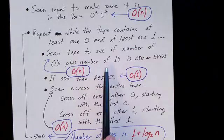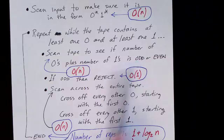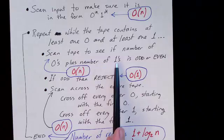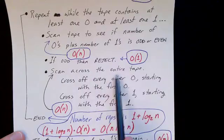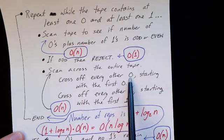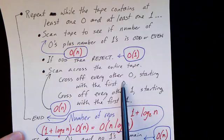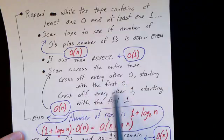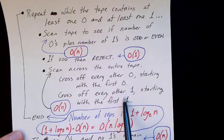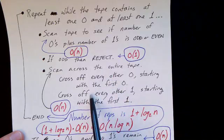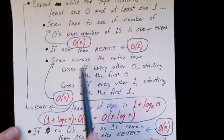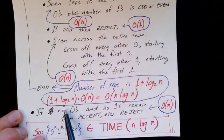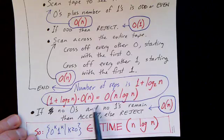If there is one extra one or one extra zero, the total would be odd — so if it is odd, we reject right there, since we must have the same number of zeros as ones. Then we scan across the entire tape and cross off every other zero, crossing off half of our zeros starting with the first zero. We also cross off every other one, crossing off half of our ones starting with the first one — changing them into X's. Finally, we scan the entire tape to make sure no zeros and no ones remain, and if so we accept; otherwise we reject.